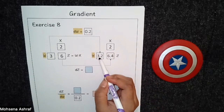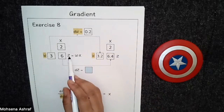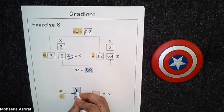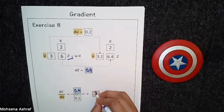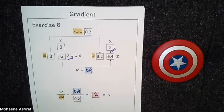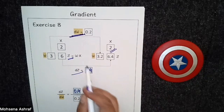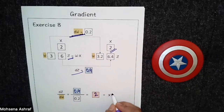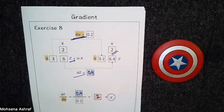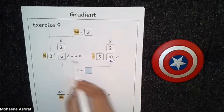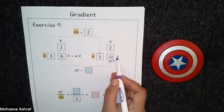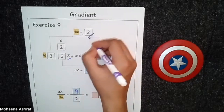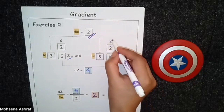Again, w is changing from 3 to 3.2, so dw = 0.2. And the output z is changing from 6 to 6.4, so dz = 0.4. So 0.4 divided by 0.2 gives us simply 2, which is the value of x. Next, z changes from 6 to 10, so dz = 4. And dz/dw = 4 divided by 2 = 2, again the value of x is 2.